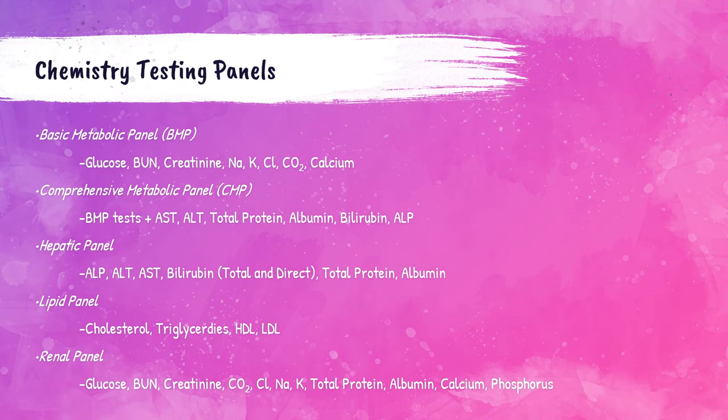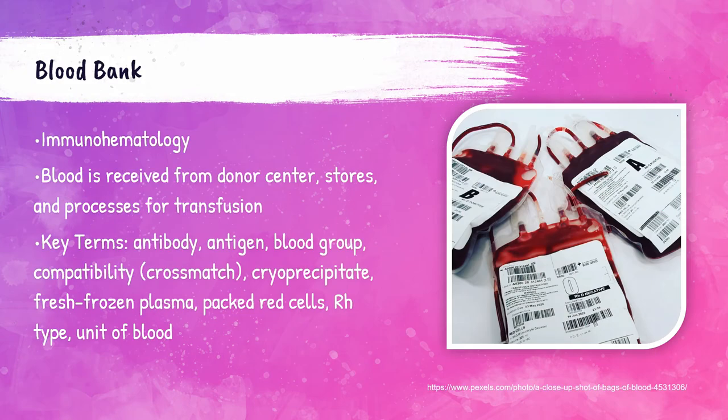The hepatic panel — when you hear 'hepatic,' think liver — includes ALP, ALT, AST, total bilirubin, direct bilirubin, total protein, and albumin. The lipid panel includes cholesterol, triglycerides, HDL, and LDL. The renal panel — 'renal' is associated with the kidney — includes glucose, BUN, creatinine, carbon dioxide, chloride, sodium, potassium, total protein, albumin, calcium, and phosphorus.